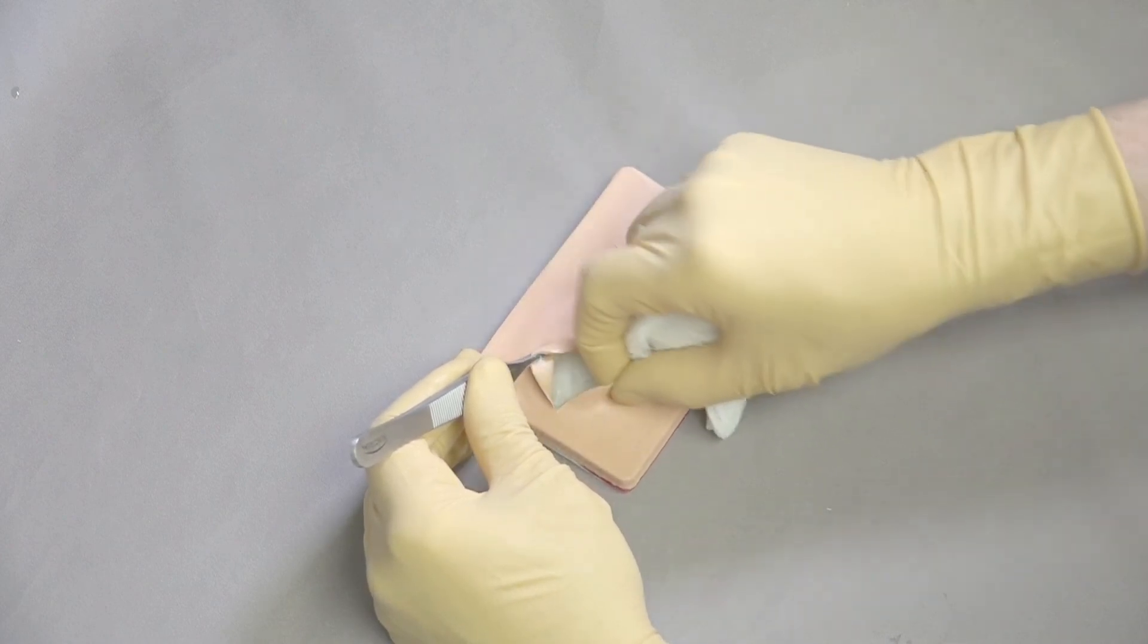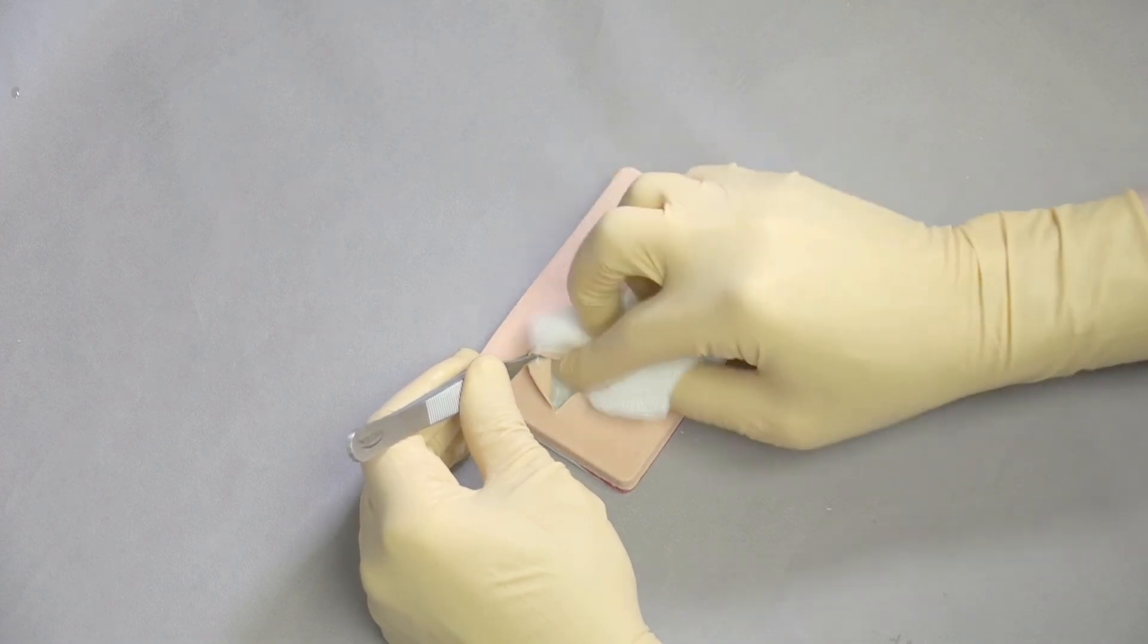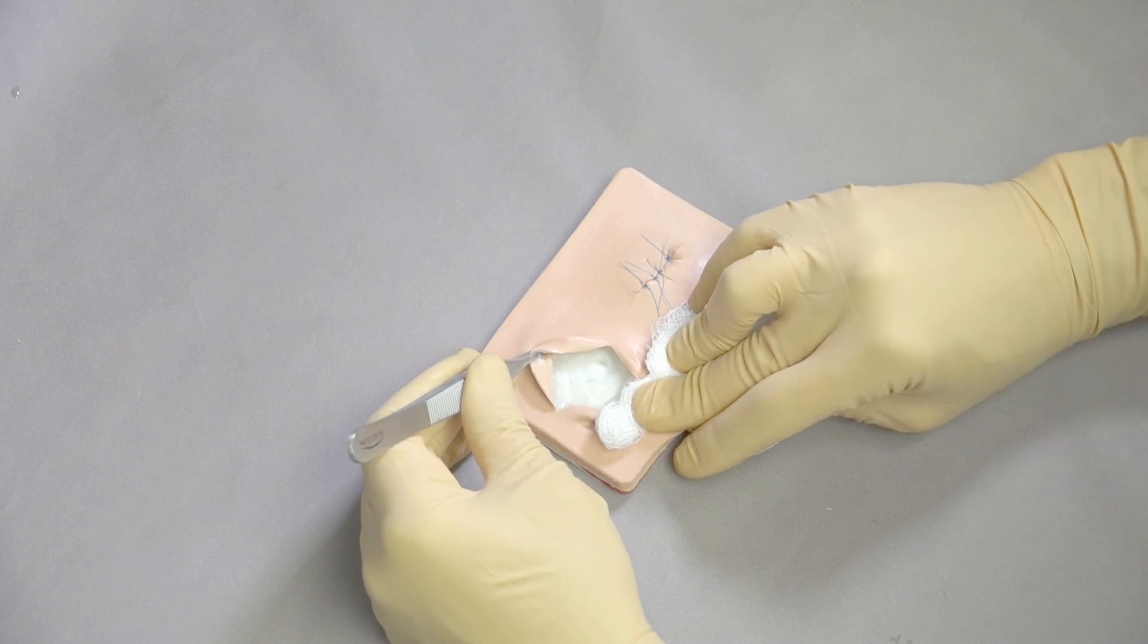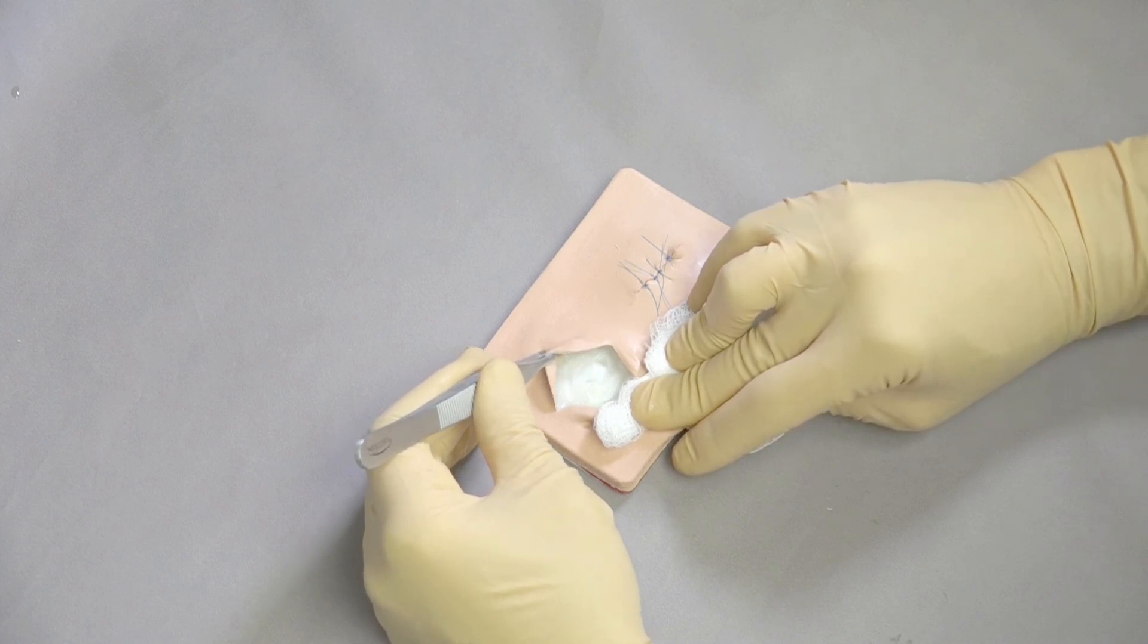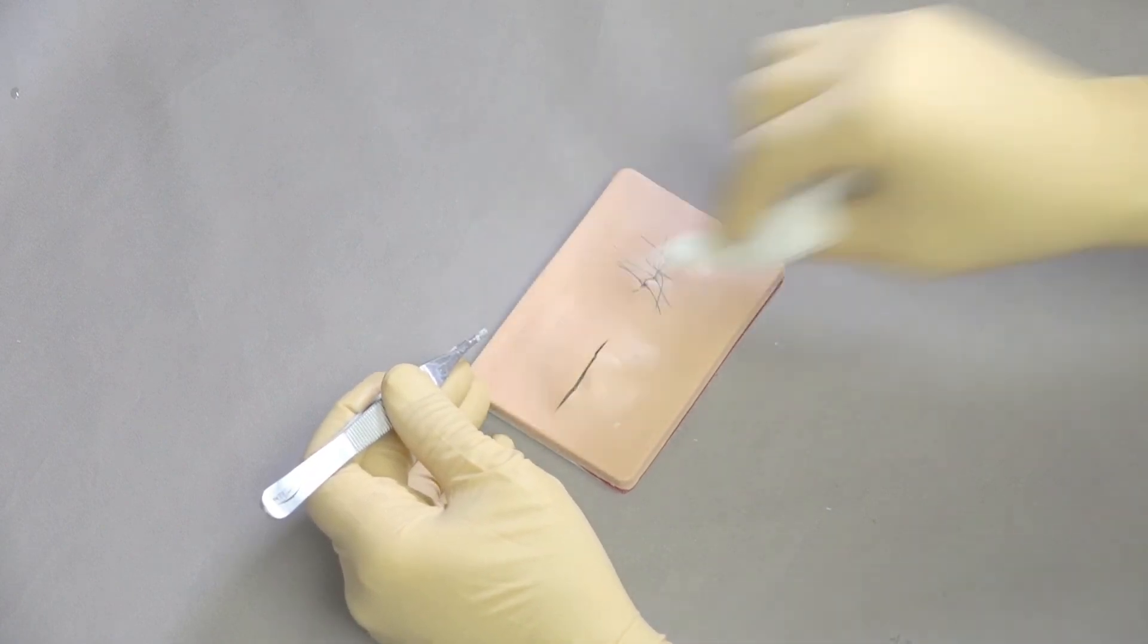And once we've cleaned it all out we've got a nice healthy bed of tissue that you can see here. And then we're going to just debride anything that's inside that we need to take care of. And these are going to be left open to drain. If you're concerned about them closing up.